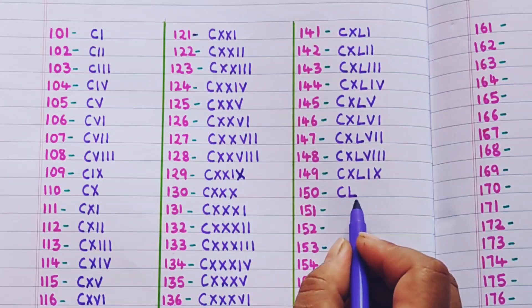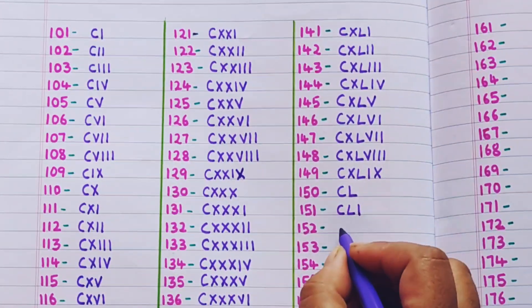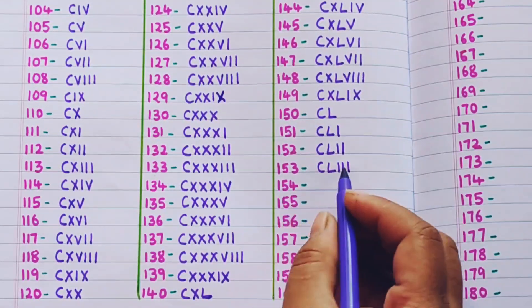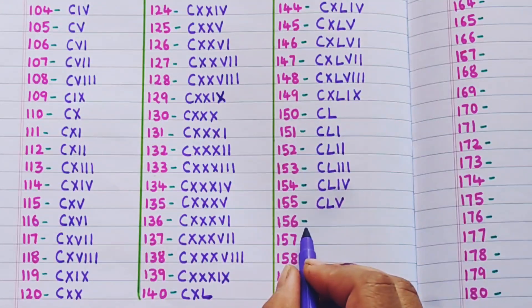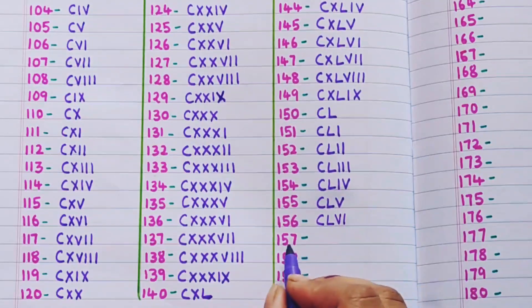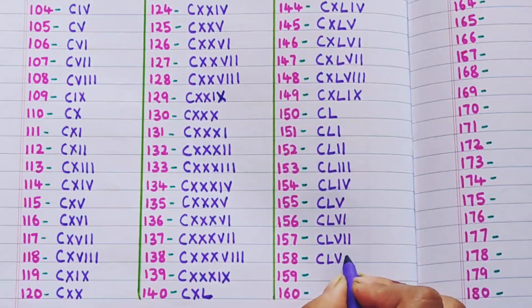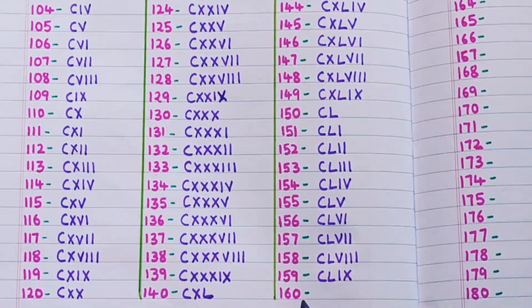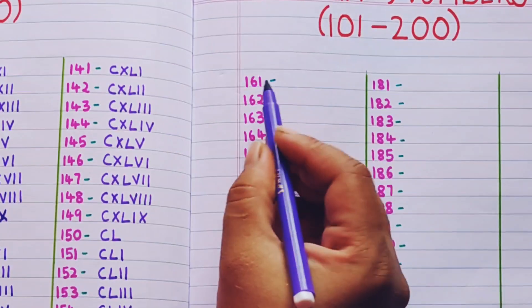150 is CL. C means 100 and L means 50, so 150 is CL. Next, 151 is CLI, 152 is CLII, 153 is CLIII, 154 is CLIV, 155 is CLV, 156 is CLVI, 157 is CLVII. C represents 100, L represents 50, and X represents 10, so all these will be added. 160 is CLX.